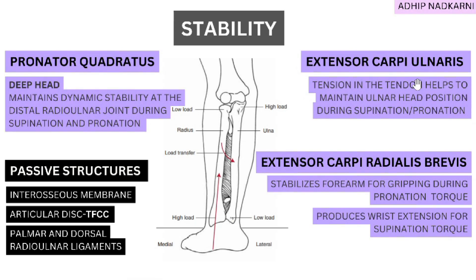The extensor carpi ulnaris is present on the ulnar side of your hand. Its tendon creates tension that helps maintain the position of the ulnar head, which is quite small distally. It must remain stable during every movement at the wrist and forearm, and the extensor carpi ulnaris helps maintain the ulnar head position during both supination and pronation.